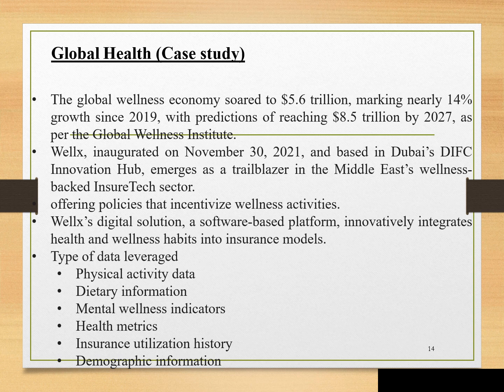The types of data leveraged by SpellX include physical activity data, dietary information, mental health indicators, health insurance utilization history, and demographic information. Physical activity data includes gym check-ins or wearable devices tracking frequency and intensity of workouts. Dietary information includes meal tracking and dietary preferences. Mental wellness indicators involve self-reported app data related to stress management. Insurance utilization history includes claims and usage patterns to understand health risk, while demographic information includes age, gender, and occupation.